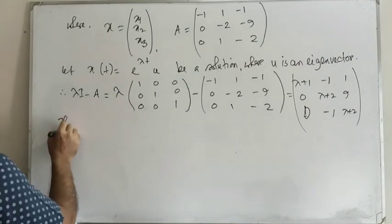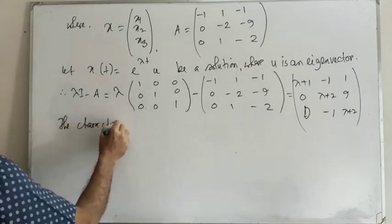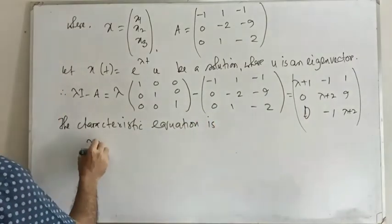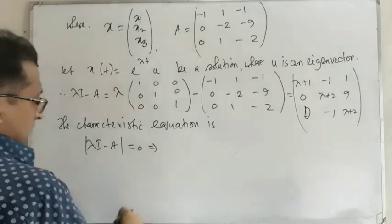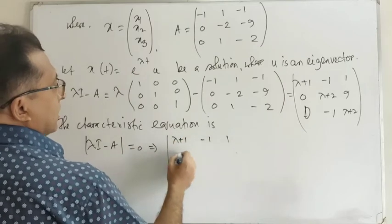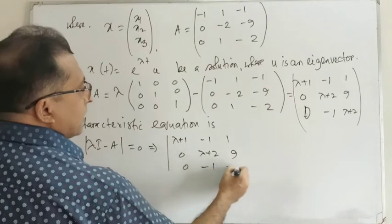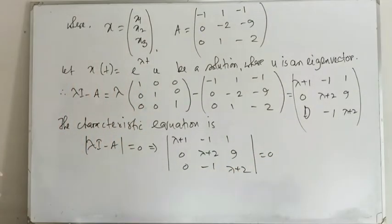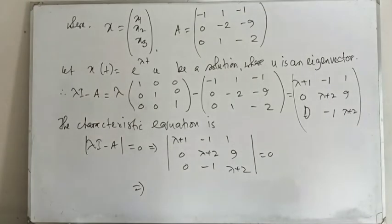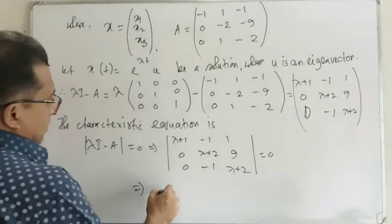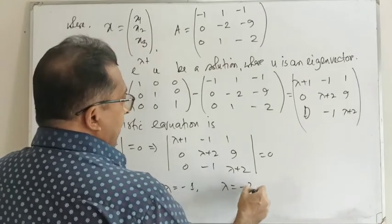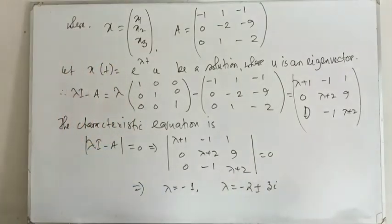The characteristic equation is the determinant of lambda plus 1, minus 1, 1; 0, lambda plus 2, 9; 0, minus 1, lambda plus 2 equals 0. After expanding the determinant, we get lambda equals minus 1, and the other values of lambda equal minus 2 plus or minus 3i. Complex conjugate roots occur in pairs: lambda equals minus 2 plus 3i and minus 2 minus 3i.